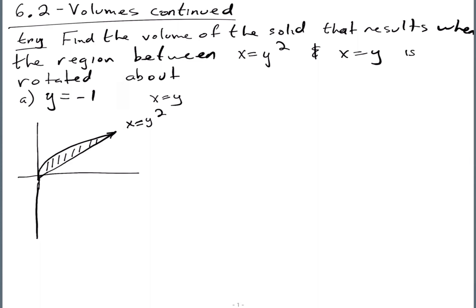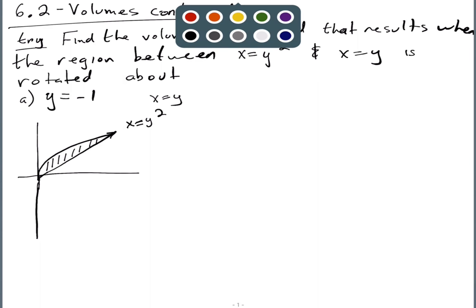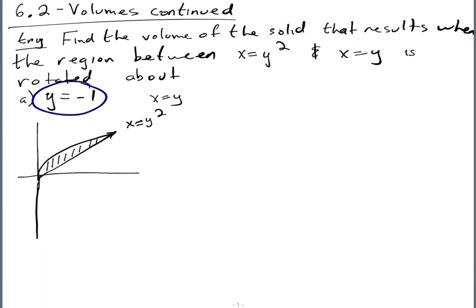The next thing is we want to draw the line that represents the axis of rotation. In this case, we're going to rotate about y equals minus one. If this is roughly to scale, what's the intersection point? It's (1, 1). So the axis of rotation is roughly down here at minus one, and we rotate that region about that blue dotted line.